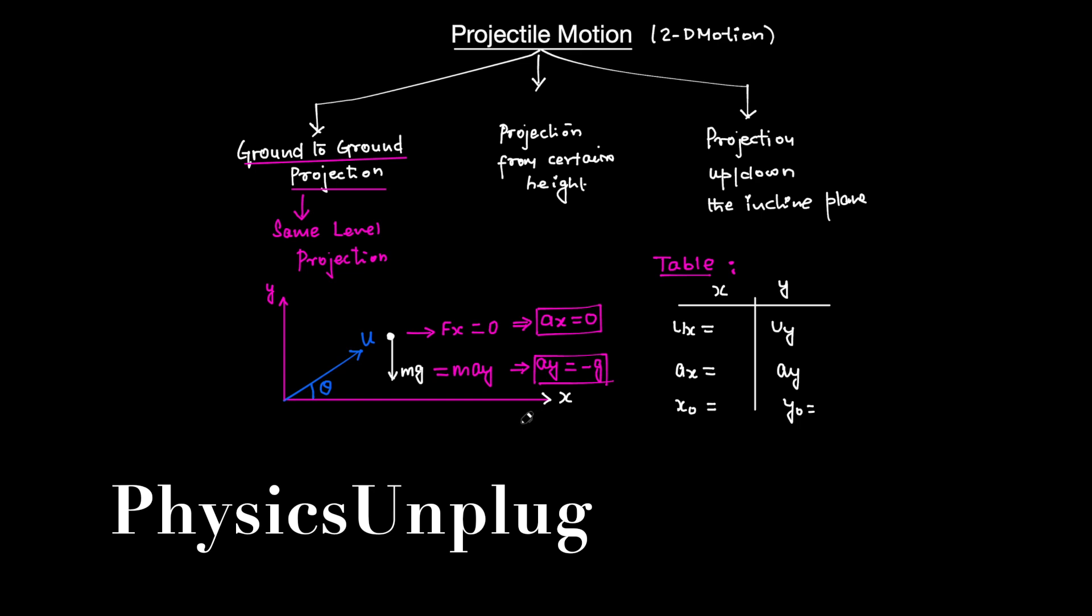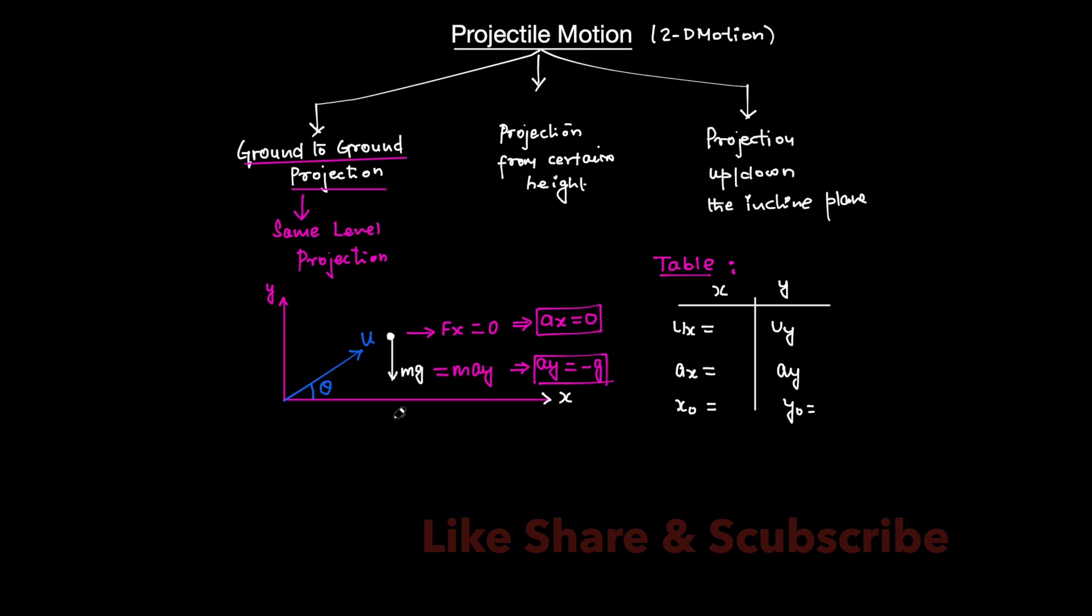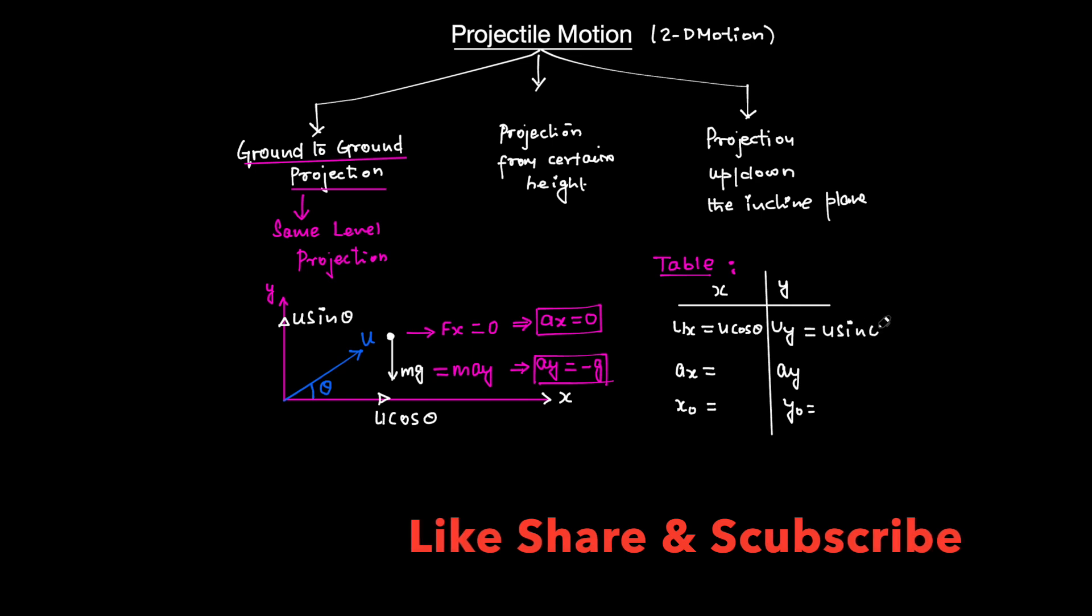By resolving the vector, the x-component comes out to be u cos θ and the y-component is u sin θ. ux is the initial velocity in the x-direction at t = 0. So ux becomes u cos θ, and uy becomes u sin θ. This is one important part of the table.